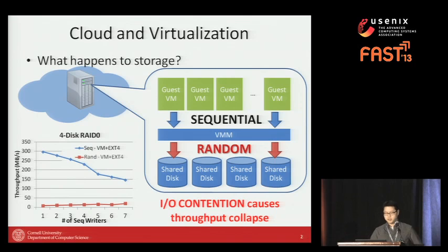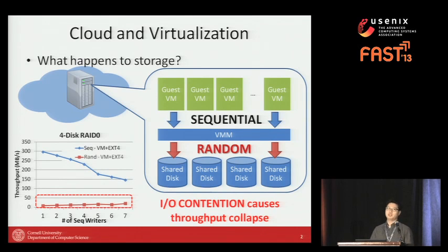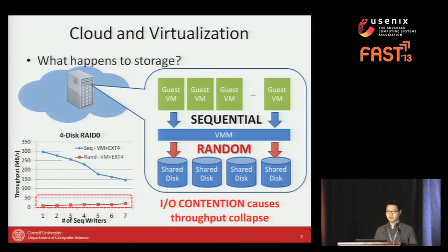To rephrase this: if there is a single virtual machine issuing random I/O, all other virtual machines — even if they are issuing sequential requests — will suffer from bad disk throughput.